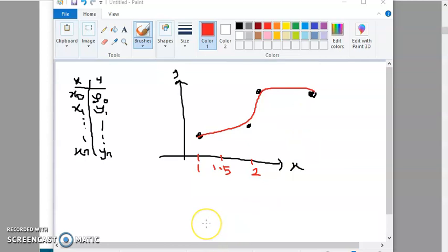So, interpolation is the process of estimating the value of Y for a certain value of X provided that X must lie within the range of this data set. And the step size of X is not necessary to be equidistant.